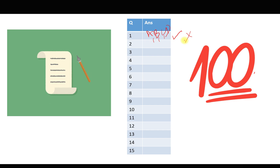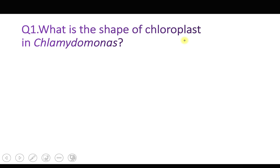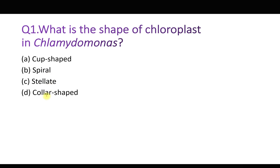Question number one: What is the shape of chloroplast in Chlamydomonas? Option A: cup-shaped, B: spiral, C: stellate, and D: collar-shaped. Chlamydomonas belongs to green algae. These cells are around 10 micrometers in diameter and half of their volume is occupied by the chloroplast, which is cup-shaped. So the correct answer is A, cup-shaped. I hope you have got the correct answer.